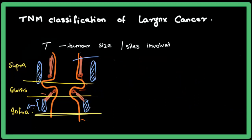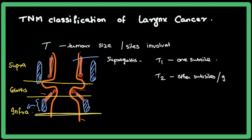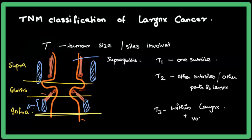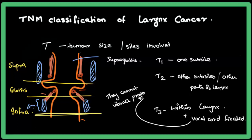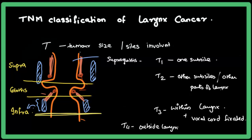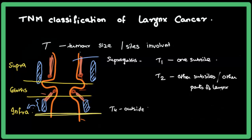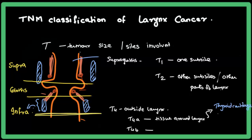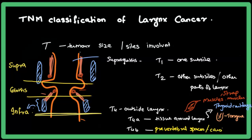These regions are called subsites. For a supraglottic tumor: T1 means only one subsite is involved; T2 means other subsites or other parts of the larynx such as the glottis or infraglottis are involved; T3 means the tumor is within the larynx but the vocal cords are fixated — meaning they cannot move or vibrate properly due to the tumor; T4 means the tumor has spread outside the larynx to surrounding tissues such as the thyroid cartilage, tongue, strap muscles, pre-vertebral spaces, or carotid artery.